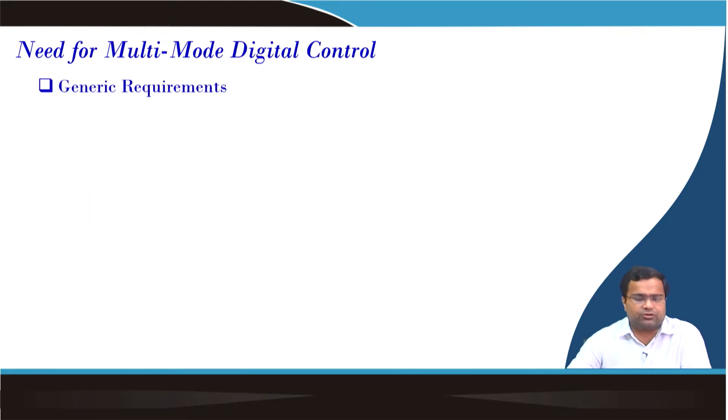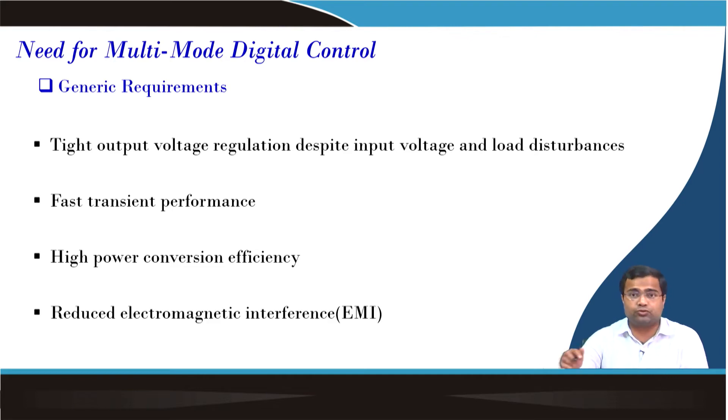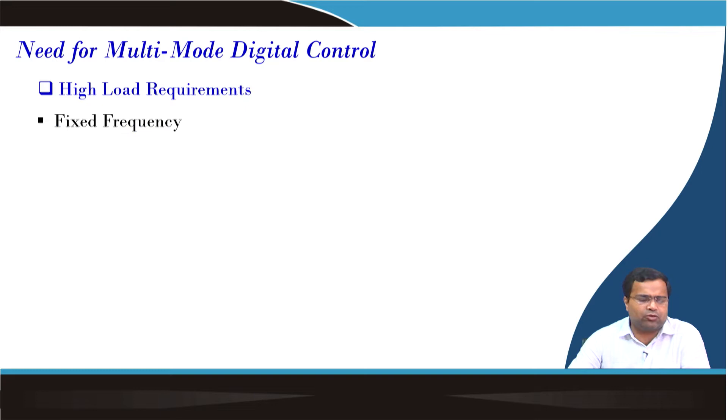What is the need for multimode control? Some of the generic requirements include tight voltage regulation when there is a change in input voltage or load current. Then we need to achieve very fast transient response, very high power conversion efficiency, and we need to also reduce EMI. These are the generic objectives. For high load current, most commercial products require fixed frequency because of filter design aspects, and we also want to achieve EMI reduction or spectral spread spectrum techniques.